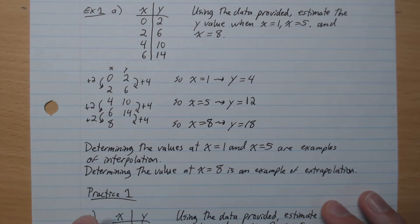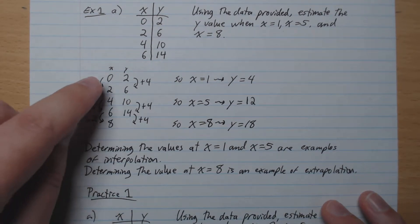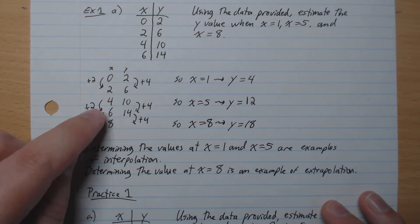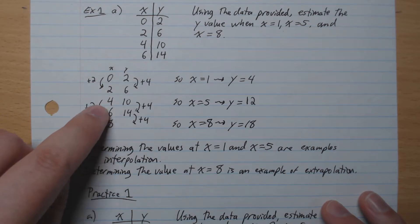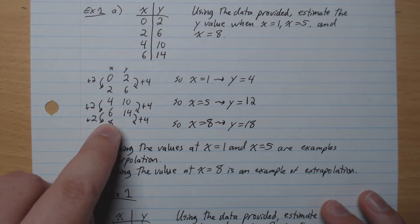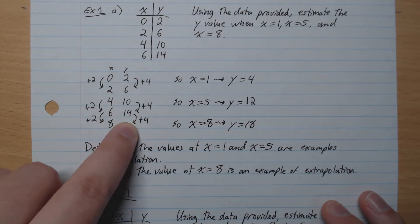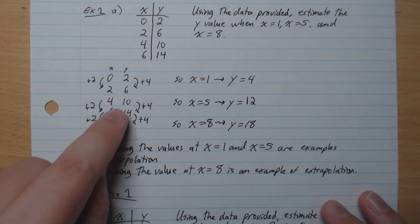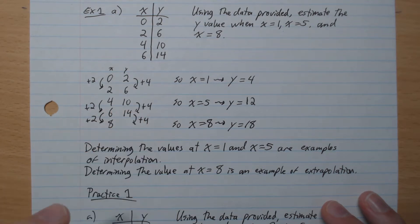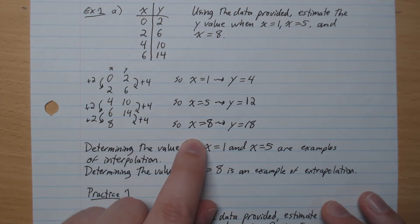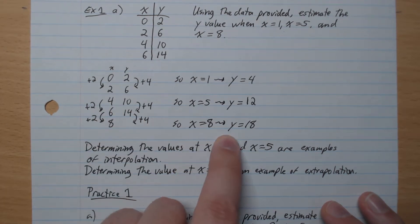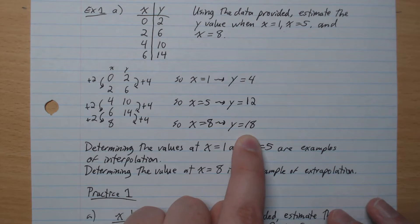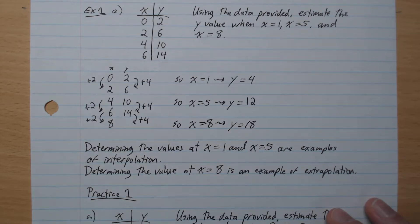What about when x equals 8? So we've got 0, 2, 4, 6, 8 — we're going plus 2. So then we go plus 4 to follow the same pattern. So 14 plus 4 gives 18. So x equals 8 gives us y equals 18.